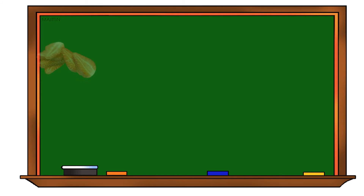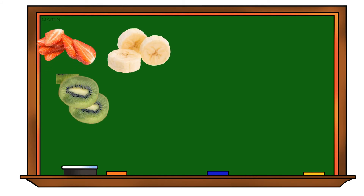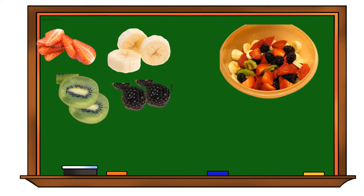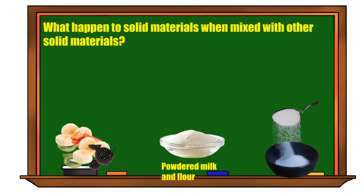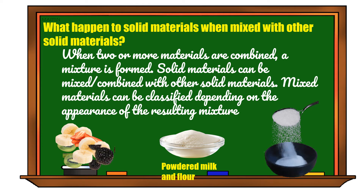When we mix strawberry with banana, kiwi, and blueberry, we form a mixture of mixed fruits. Mixed fruits is an example of a heterogeneous mixture. Now class, what happened to solid materials when mixed with other solid materials — like mixed fruits, powdered milk and flour, and iodized salt and sugar? When two or more materials are combined, a mixture is formed. Solid materials can be mixed with other solid materials, and mixed materials can be classified depending on the appearance of the resulting mixture.